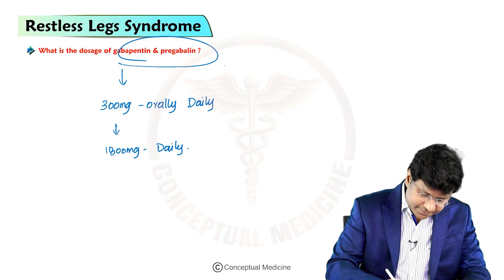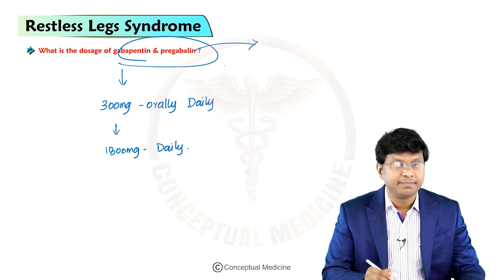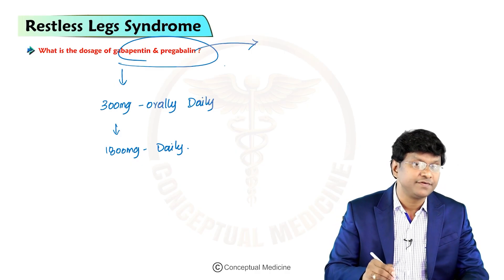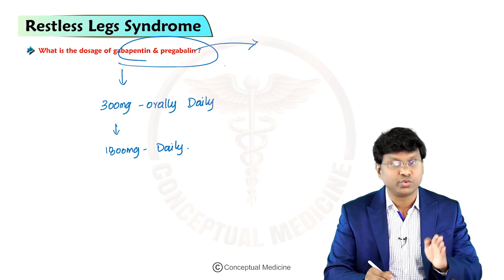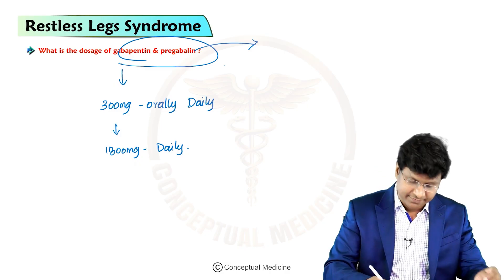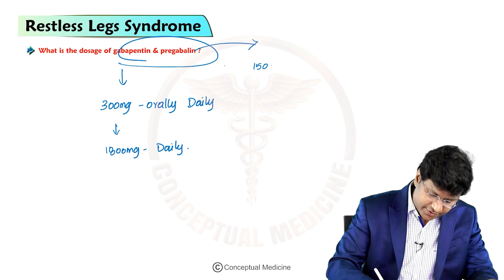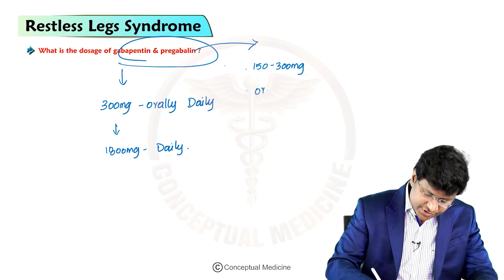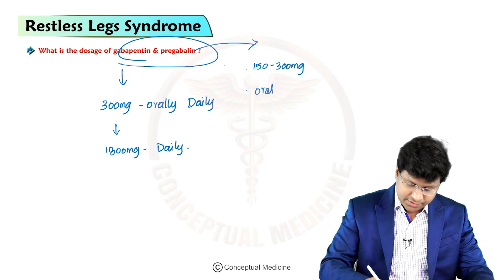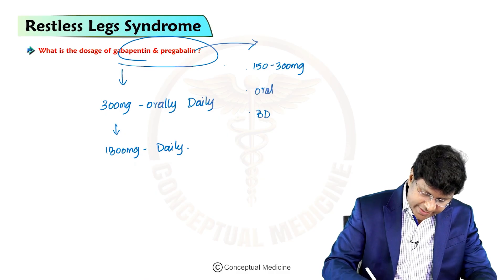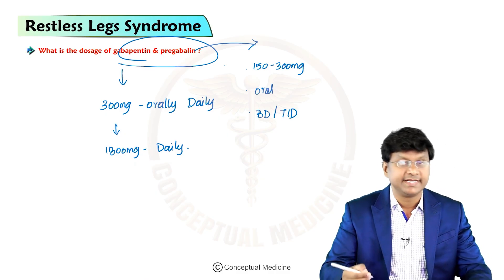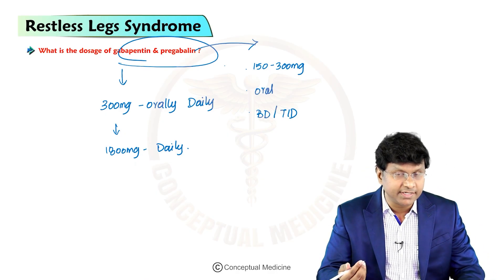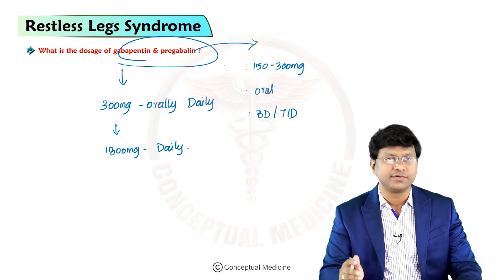Then we have pregabalin. The dosage of pregabalin is 150 to 300 milligrams orally, divided twice to three times daily — depending upon the response and tolerance of the individual.